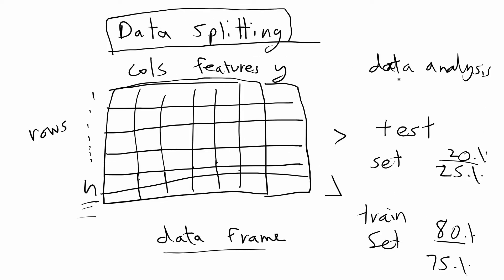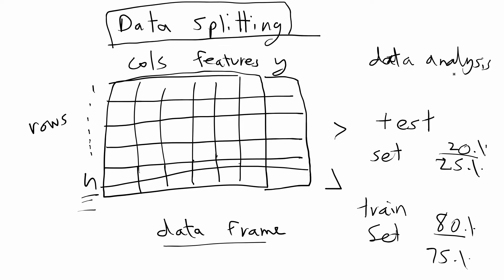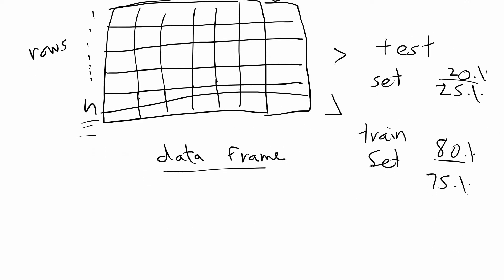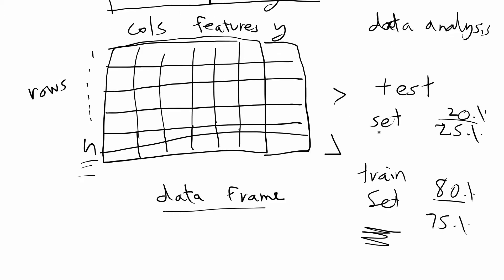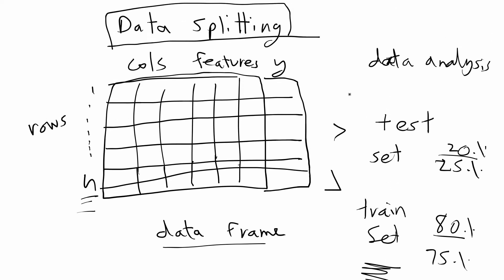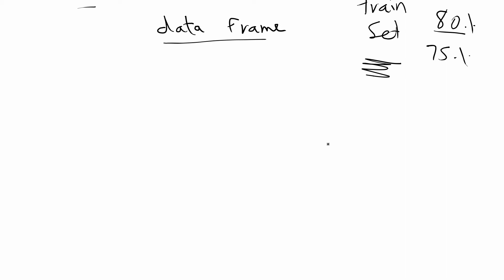The reason you want to do this data splitting step before data analysis is you want to train your models on the training set, pick the best model based on a subset of the data, and then once you have that best model picked out, you fit it and test how well it fits to your test set. When you do this train-test split, it's very important because you want the model you pick to generalize well to the population.